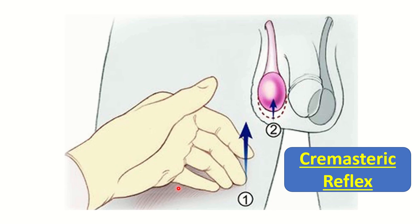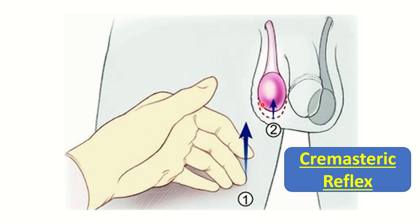In the cremasteric reflex, tapping on the medial side of the thigh causes contraction of the cremasteric muscle. When tapped on the inner aspect of the thigh, a signal travels upward, reaches the spinal cord, and from the spinal cord another nerve innervates the cremasteric muscle, causing contraction and producing the cremasteric reflex.